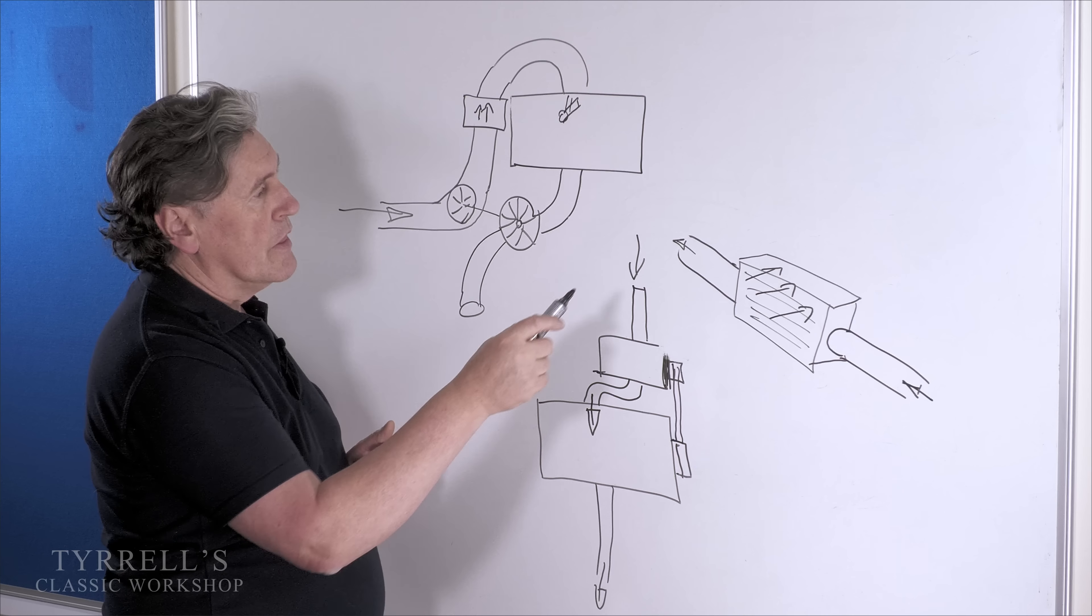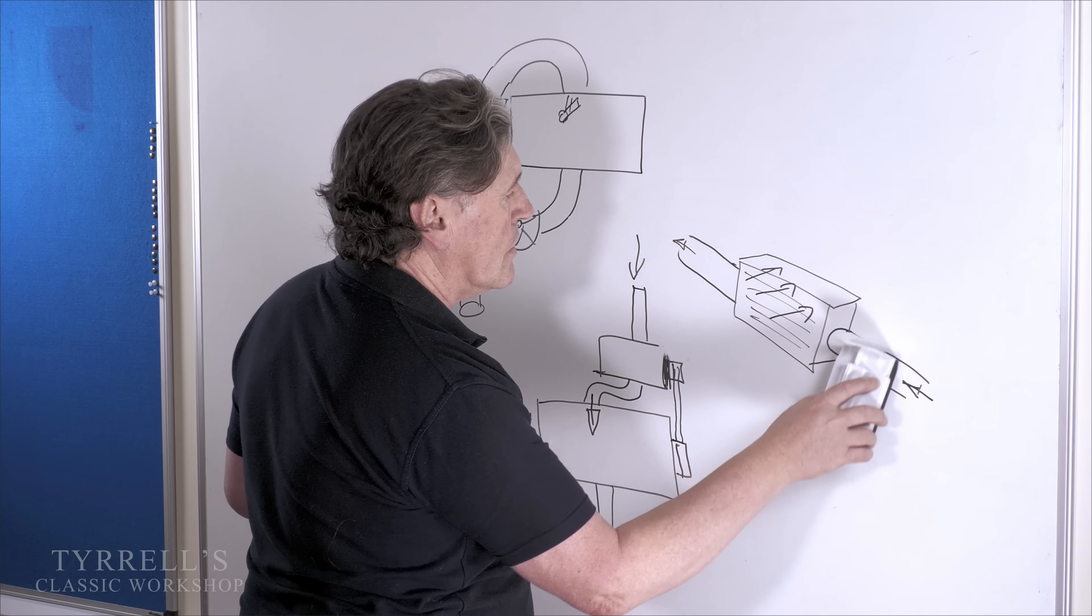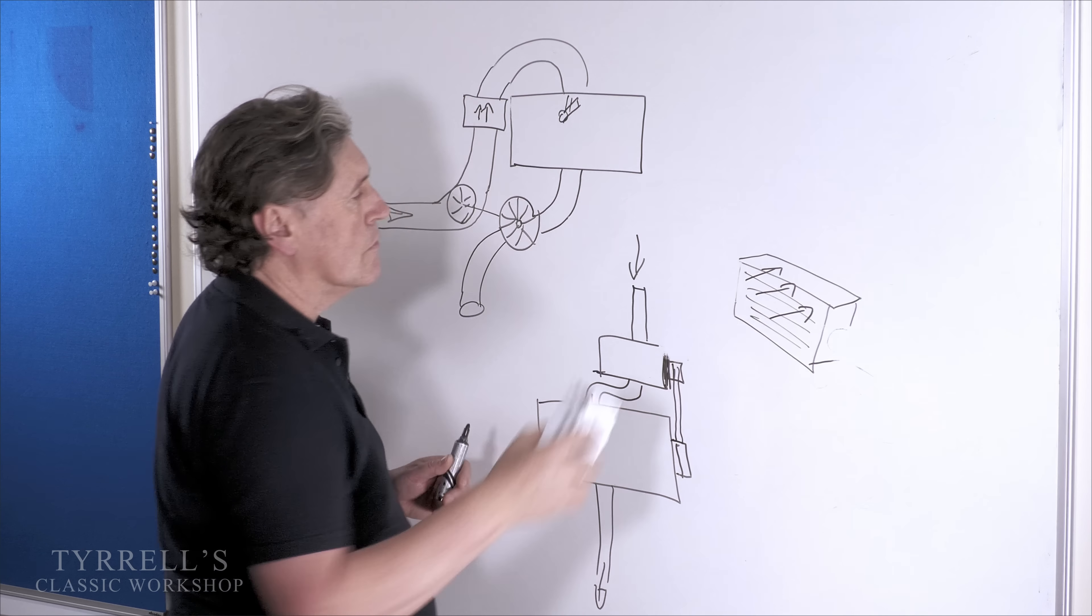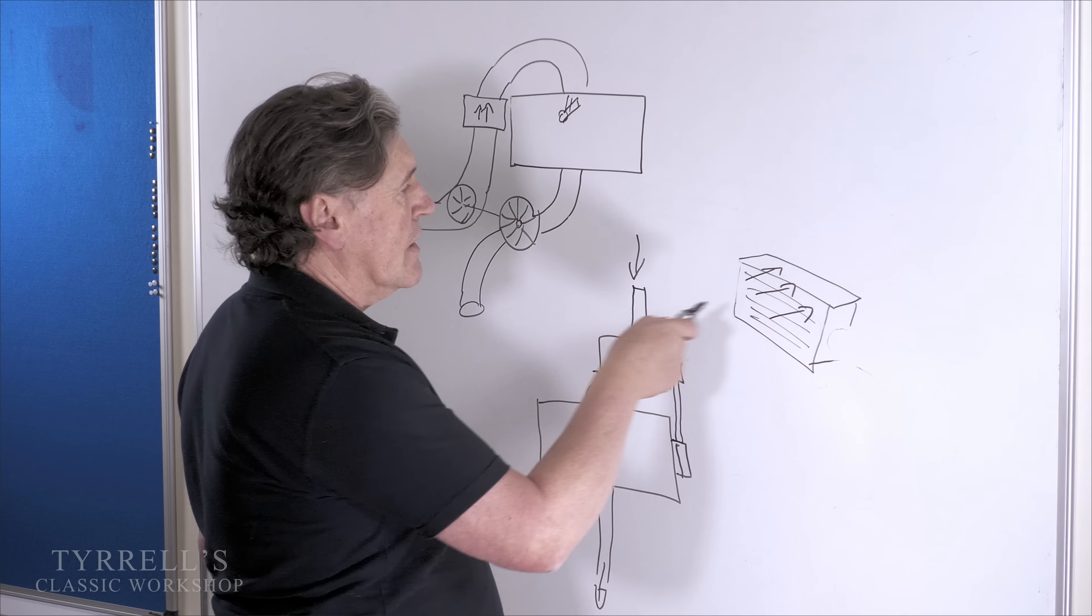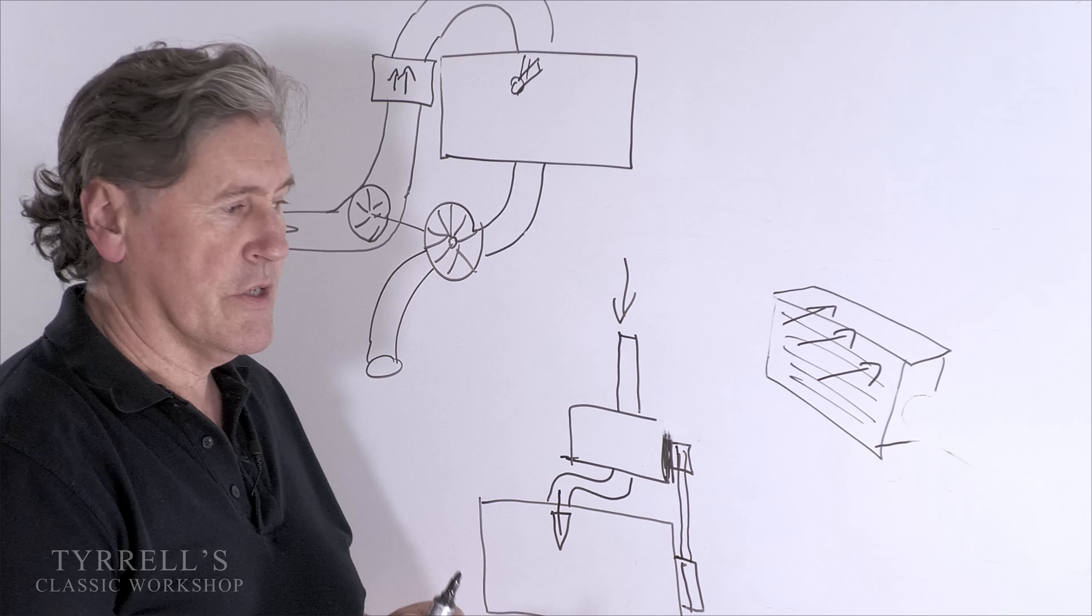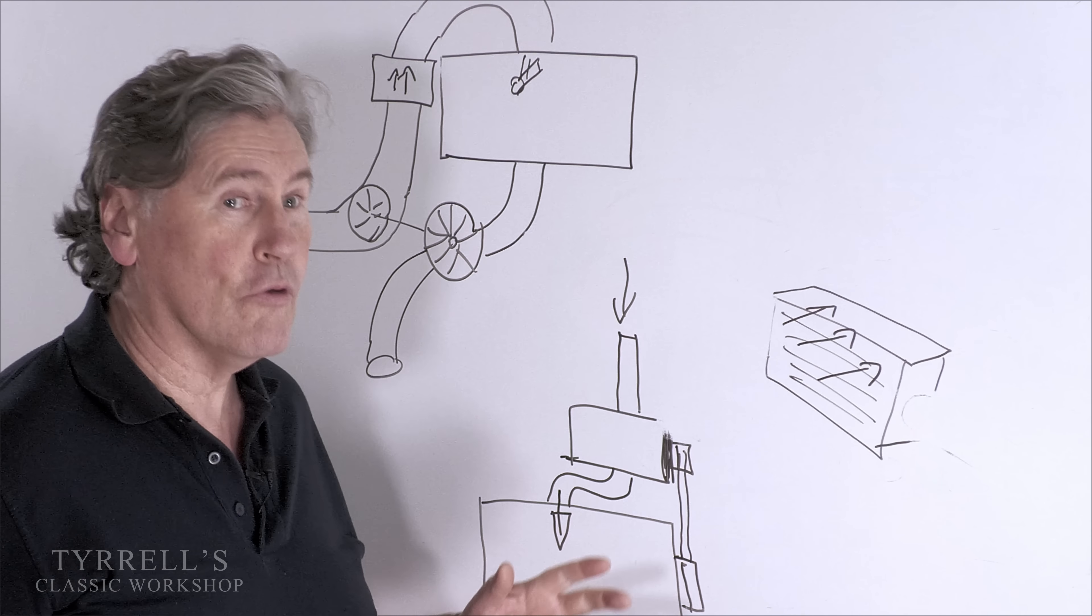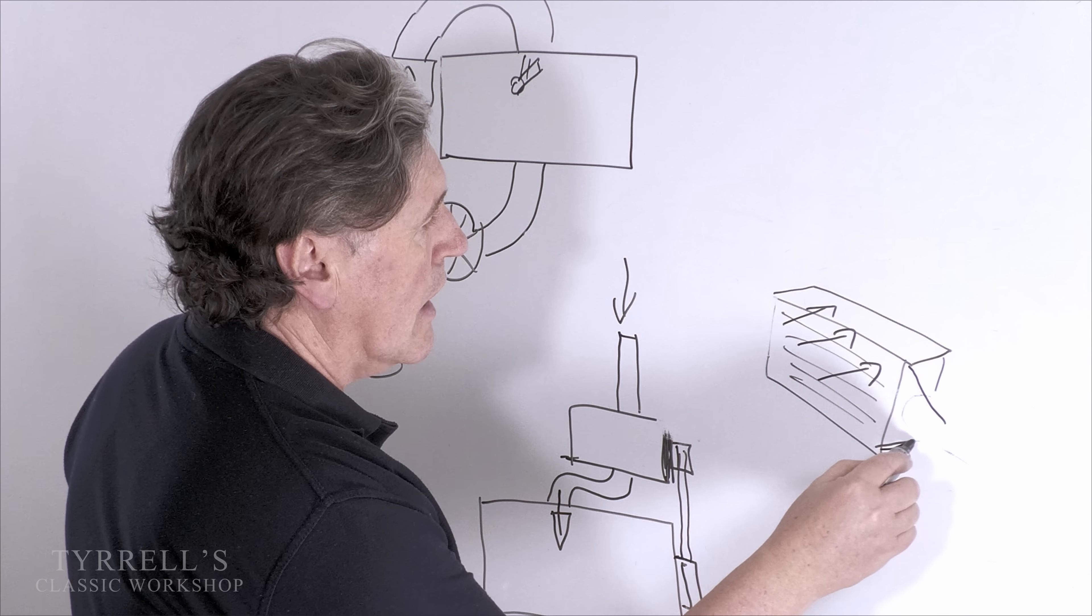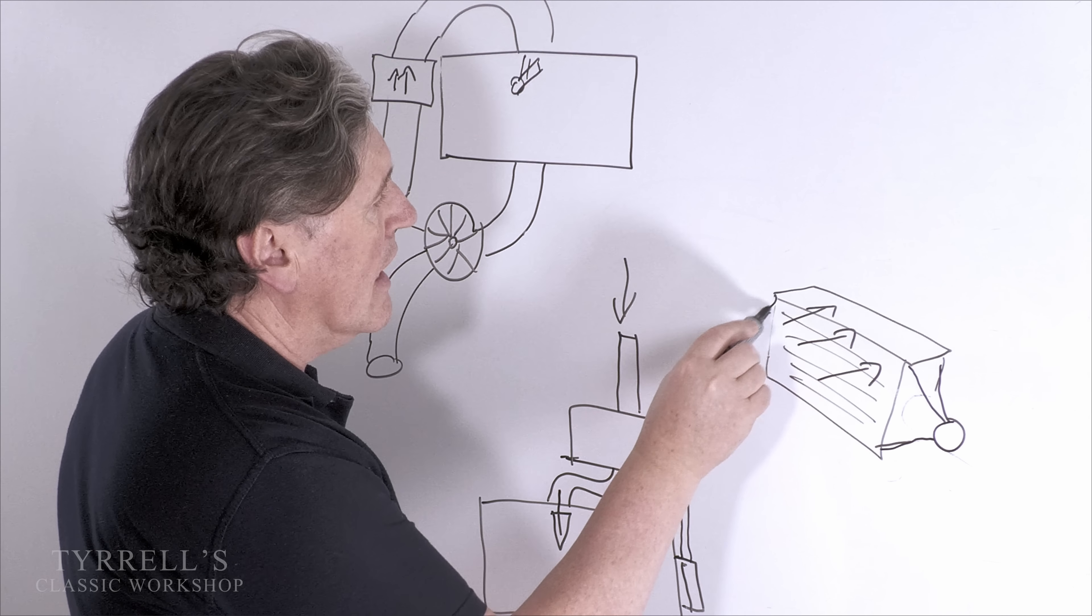There is one other kind of intercooler and that's called a charge cooler. And the difference between an intercooler and a charge cooler is that you still have the air going through here, but the charge cooler is normally not on the front of the engine, it's somewhere else in the vehicle, and it doesn't have to be in the air flow at all. And the reason for that is that the charge cooler has a cooling hose coming in and out.